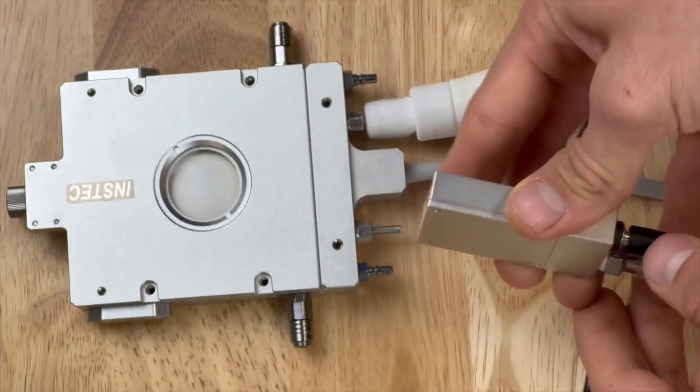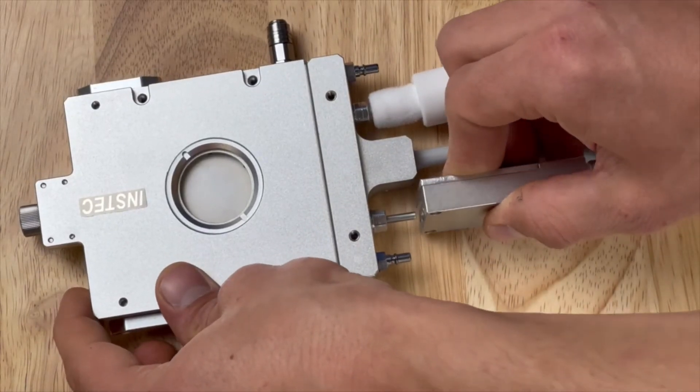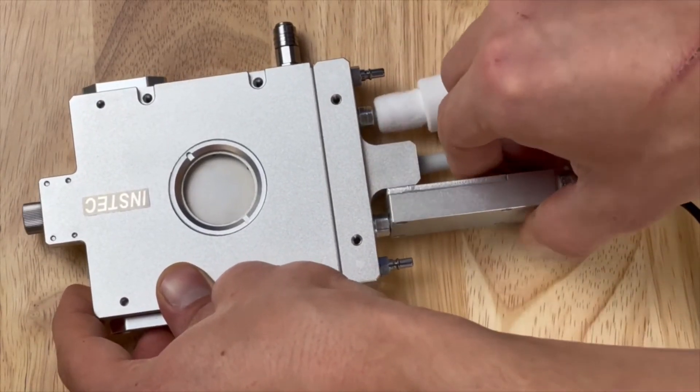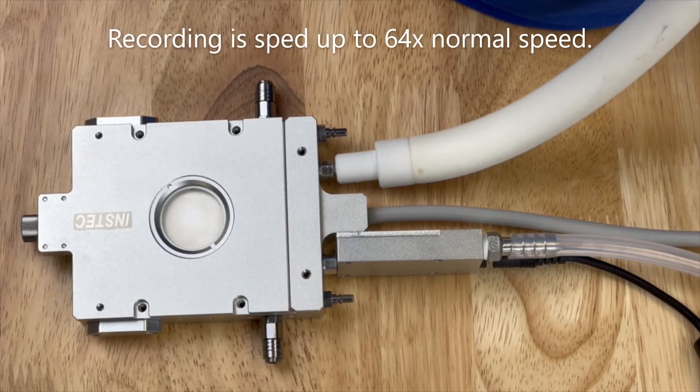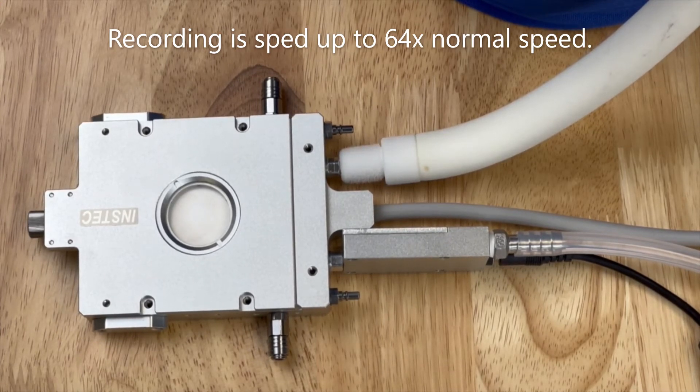This is a simple addition to any existing INSTEC system that allows you to run long duration experiments without any ice formation. This footage is sped up to 64 times normal speed and you can see that while some ice formation does occur on the inlet tube, no ice forms on the uninsulated LN2 outlet.